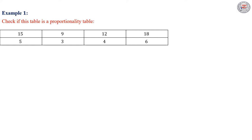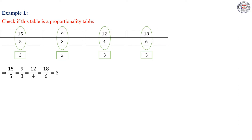Check if this table is a proportionality table. In order to know if this table is a proportionality table or not, we have to divide 15 by 5 — we get 3; 9 by 3 we get 3; 12 by 4 we get 3; and 18 by 6 we get 3. Then 15/5 = 9/3 = 12/4 = 18/6 = 3. This table is a proportionality table, and 3 is the proportionality constant.